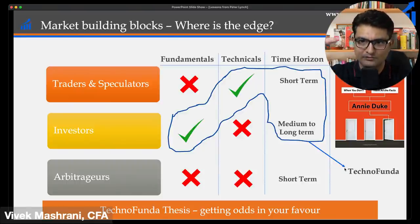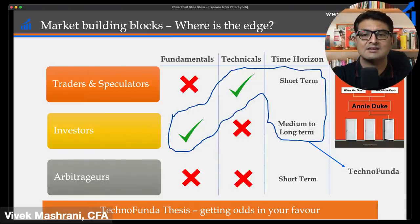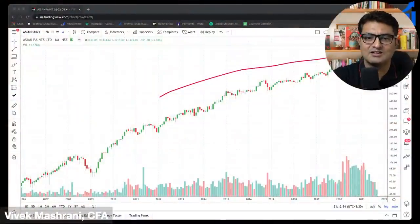Investors often have a mental block: 'Technicals are for traders, I am a long-term investor.' That perception is built because most people using technicals are traders. But if you implement a strategy using something most investors aren't using, and blend it with fundamentals that traders ignore, you logically get odds in your favor. You already do fundamental analysis like everyone else, and then cross-check and validate — increasing your probability through technical analysis. That is where you get an edge.